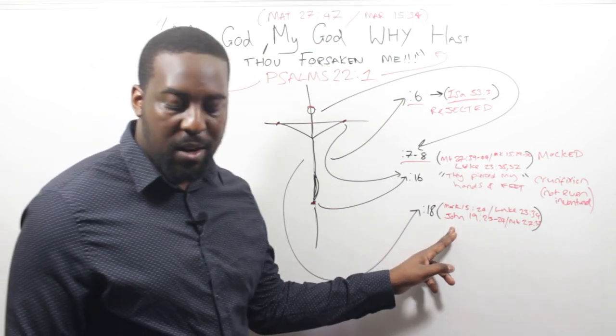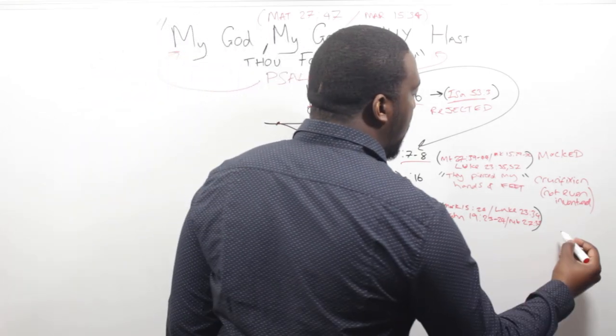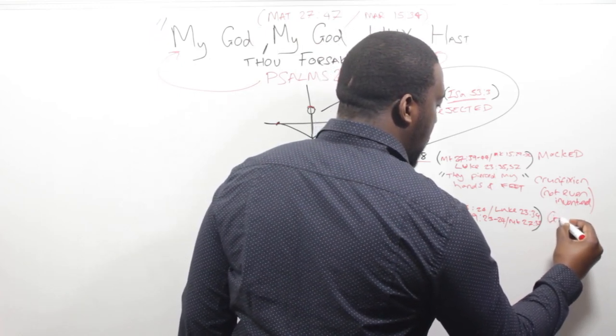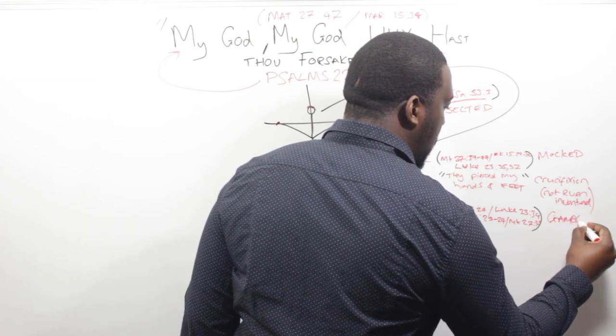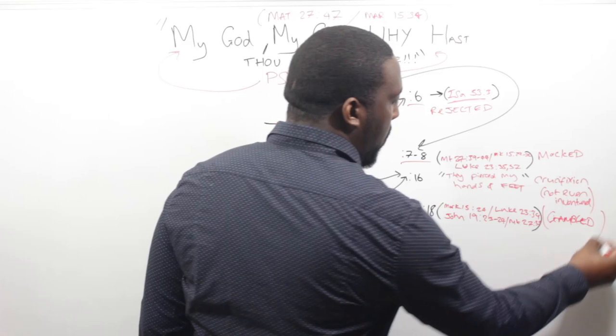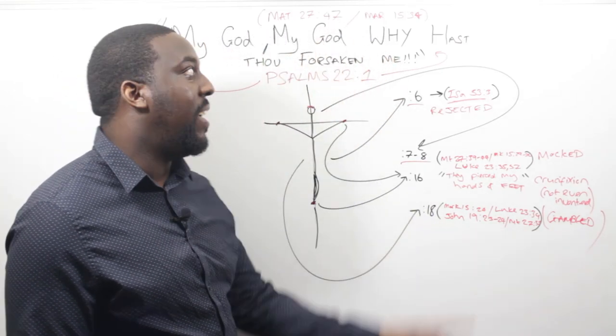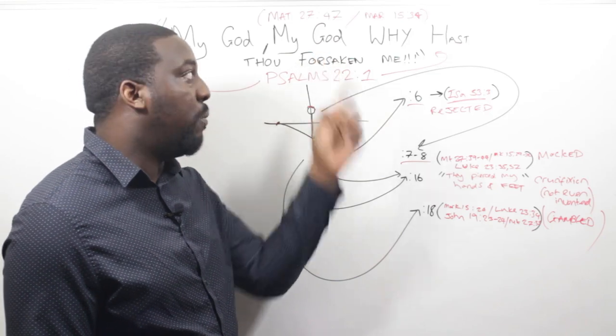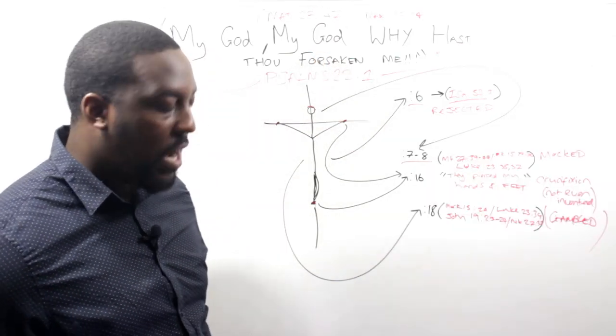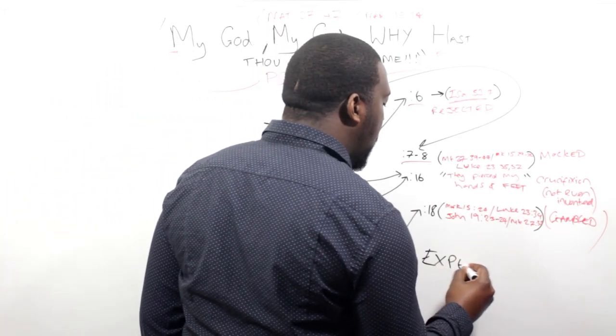And we wrap up here talking about how, in verse 18 of Psalm 22, how they parted his garments by lots. Gambled. And all of this stuff, you put it together and you see exactly why he was pointing to Psalms. Why he said, my God, my God, why has thou forsaken me? Because he expected you to know.